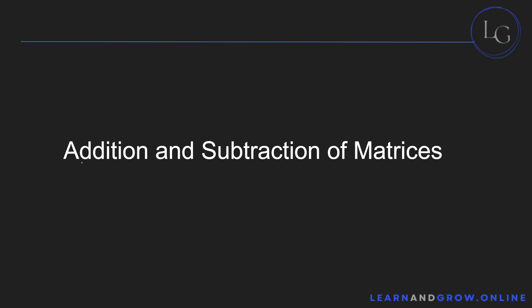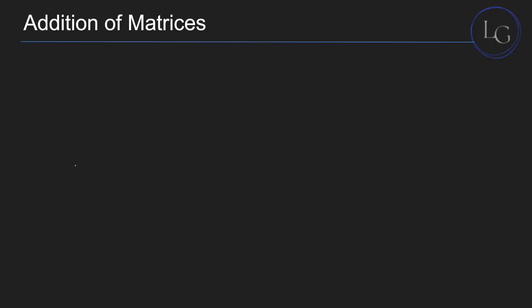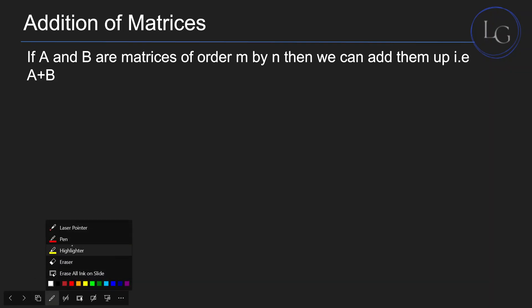Let's discuss the addition and subtraction of matrices. For addition of matrices, if we have matrices A and B, and they both are of the order M by N, so they have the same order, then we can add them up as A plus B.